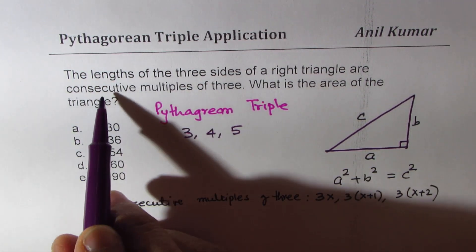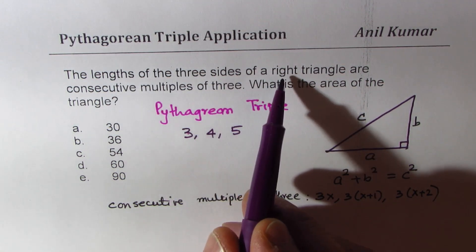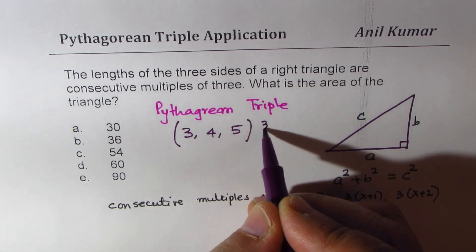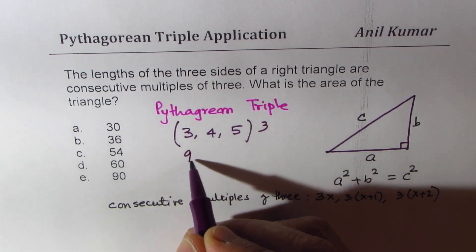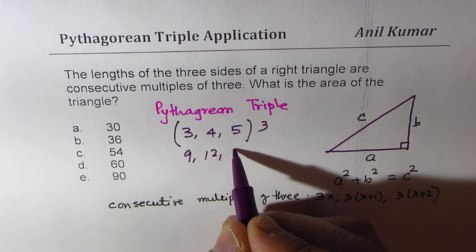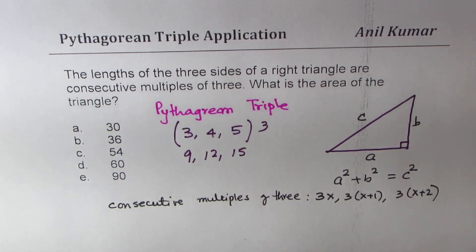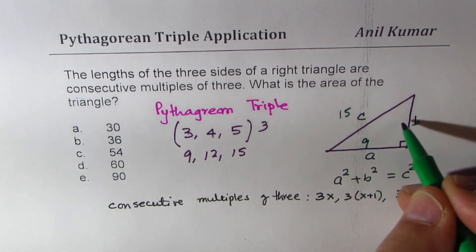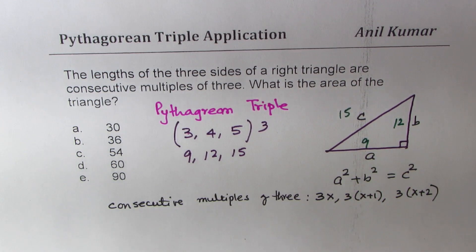Now, if I say that three sides are multiples of three, we could actually multiply these by three. So what we get here is nine, 12, and 15. So if those are the three sides, in that case, 15 is going to be the hypotenuse. Nine and 12 will be the legs.